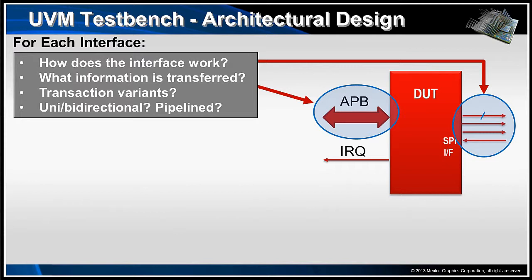When we think about verifying a particular design, there are certain things we need to think about. The first is we need to think about the interfaces we're going to use to communicate with the design. For each of those interfaces, we need to think about how the interface works, what information is being transferred across that interface. Are there any variants of the transactions that are occurring at that interface? Is it unidirectional, bidirectional, pipeline? Those sorts of things.